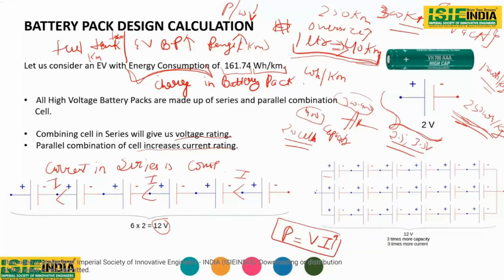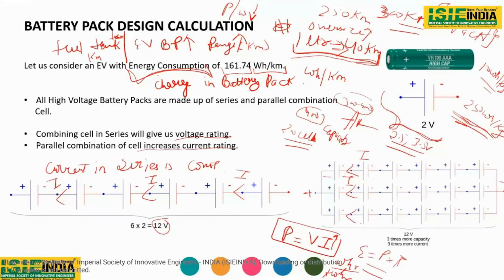In a parallel connection, voltage remains the same while current increases. Power is the product of voltage and current, and energy is power multiplied by time, giving the energy content in watt-hours or kilowatt-hours. For example, connecting three strings in parallel gives three times the current. So series connections increase voltage rating, while increasing the number of parallel strings increases the current rating of the battery pack.